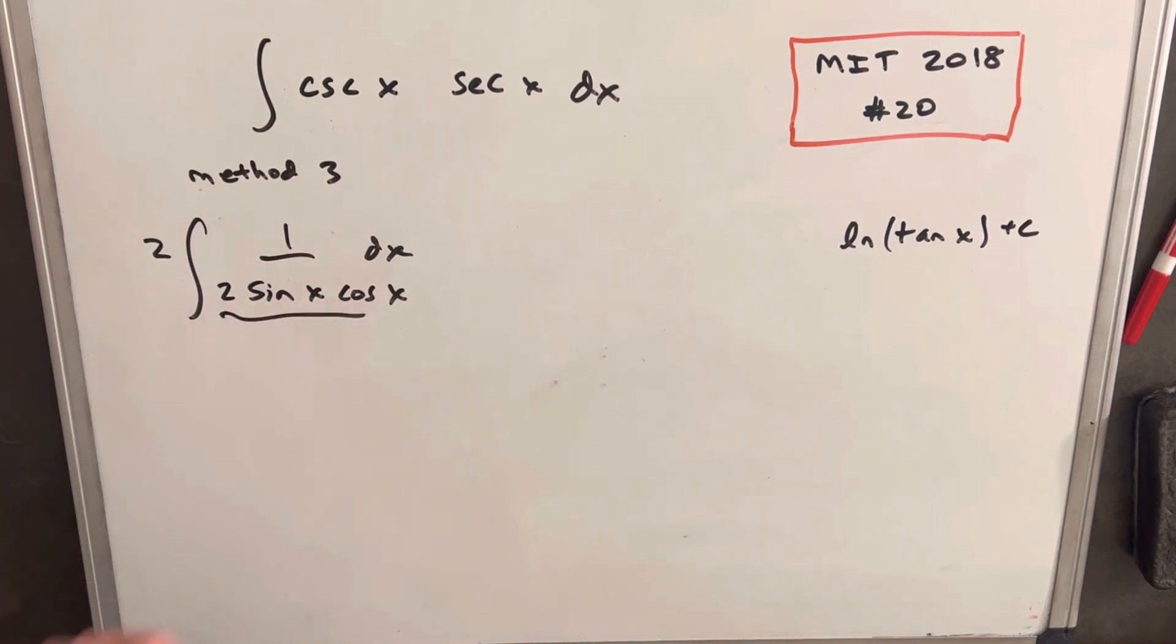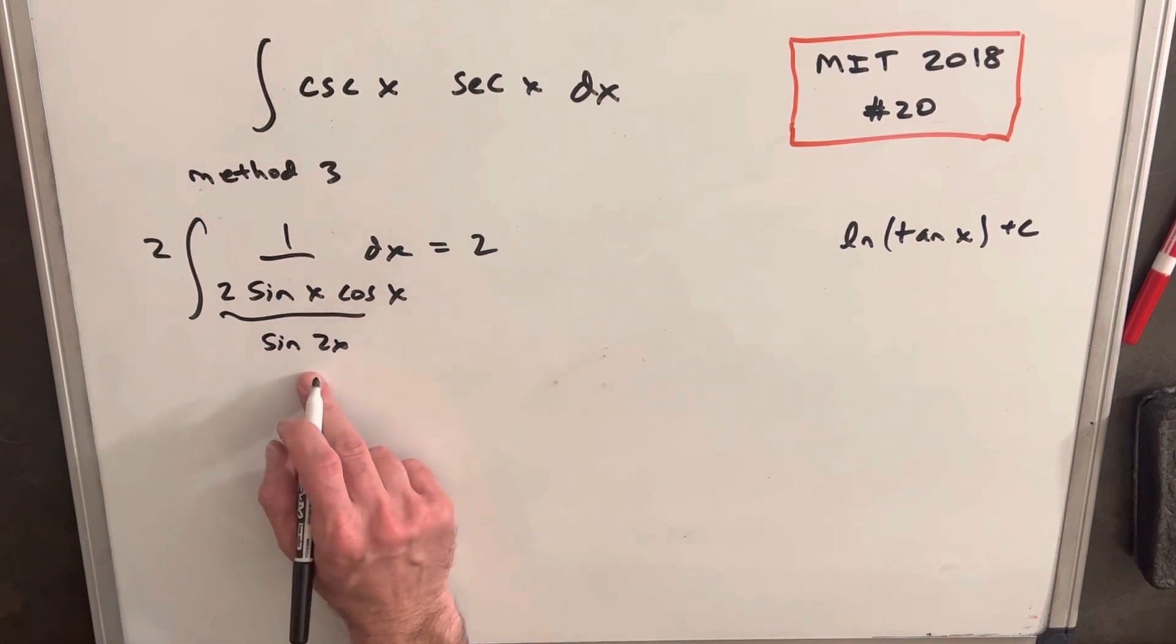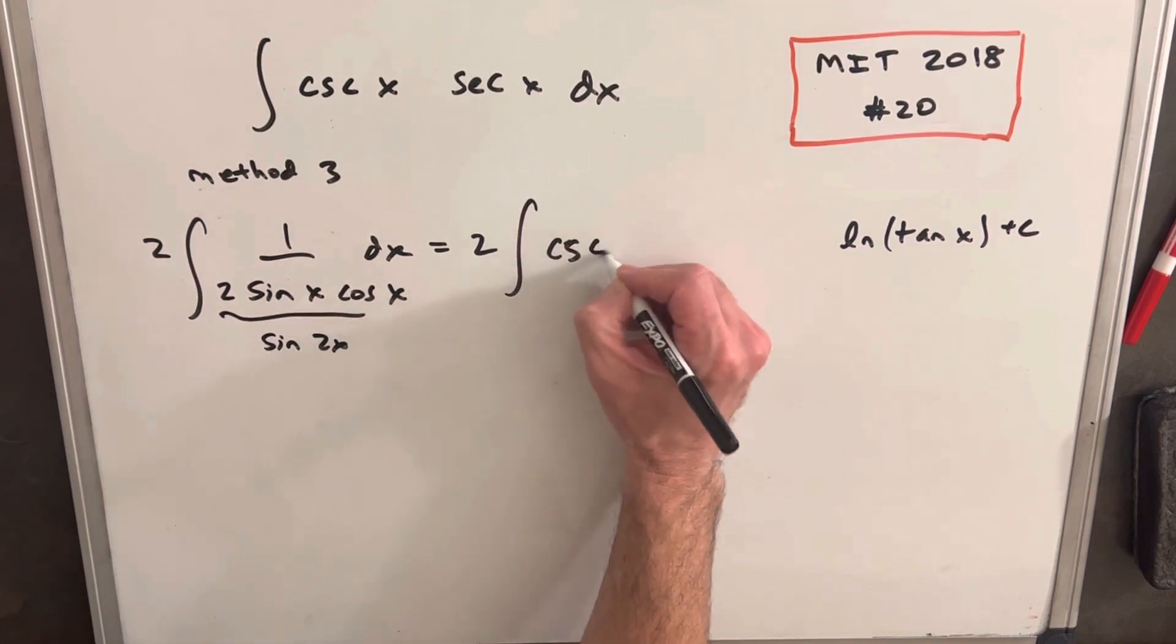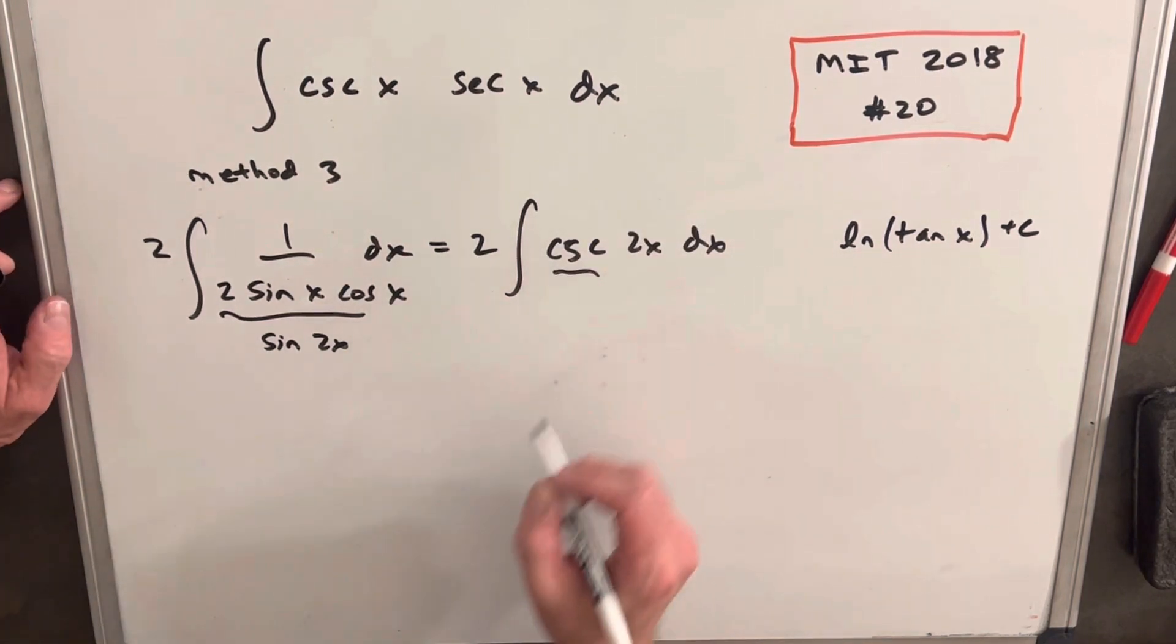But then we can use our double angle formula here, and this is the same thing as sine of 2x. So then when we rewrite this, since sine is in the denominator, we can write this as cosecant of 2x. So we'll have cosecant 2x dx. And this is a pretty common integral, right?